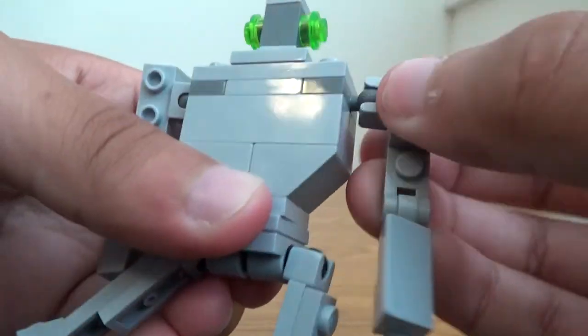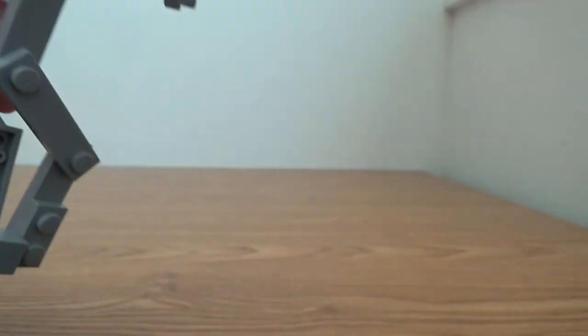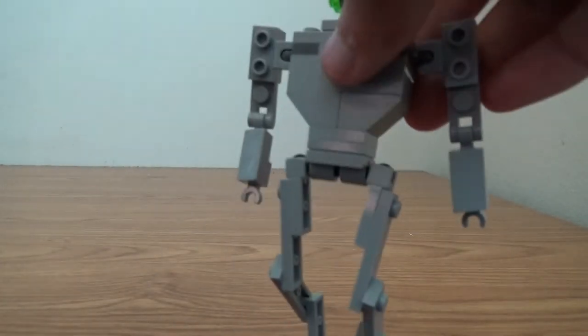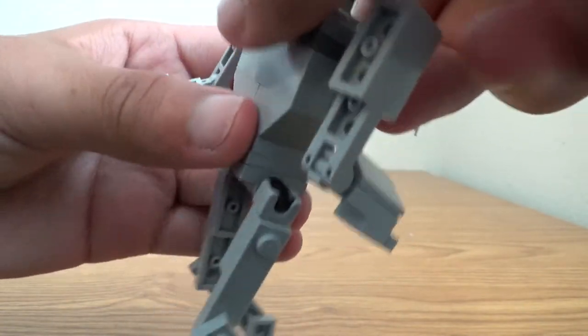And then shoulders are on the ball joint. And that's articulation. Now we can get to the transformation. What you want to do, do this.